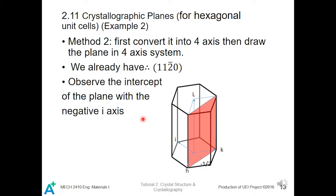For the second method, we first convert to 4-axis and then draw the plane in the 4-axis system. We already have the coordinate from the previous slide and apply the conversion formula. We observe the intercept of the plane with the i-axis in particular, since the intersection for h, k, l axes is already known. The i-axis intercept will be negative 1/2, so its Miller index is the reciprocal: 1 over (−1/2) = 2-bar. Therefore, the answer is equivalent: (1, 1, 2-bar, 0).